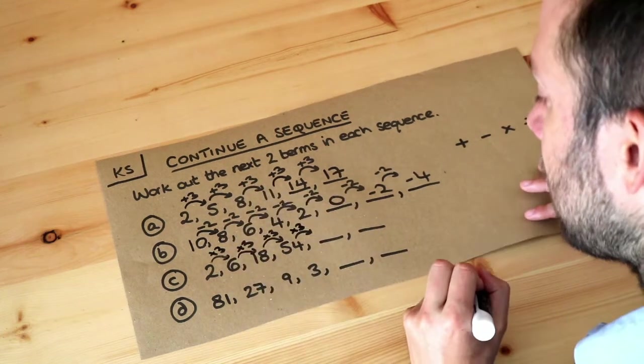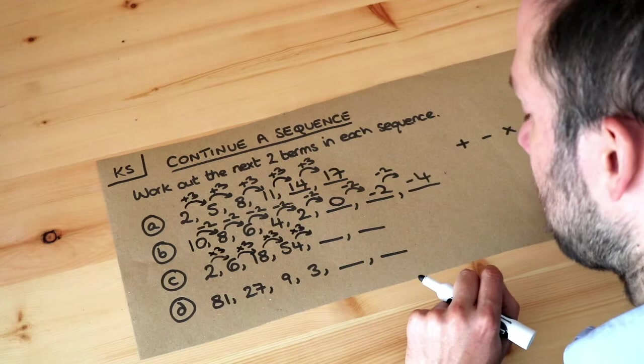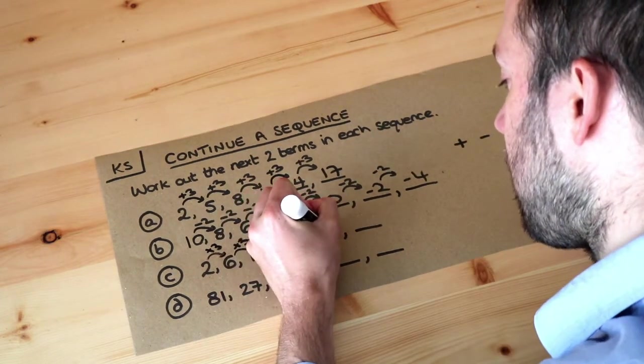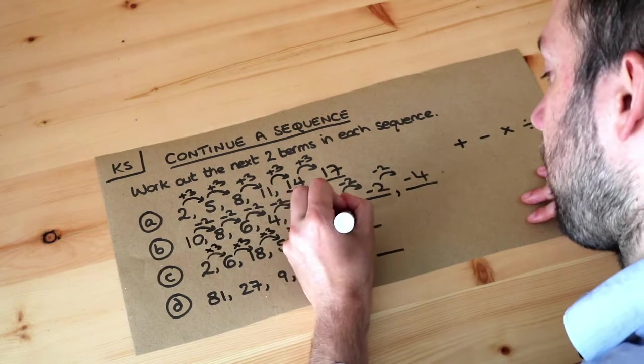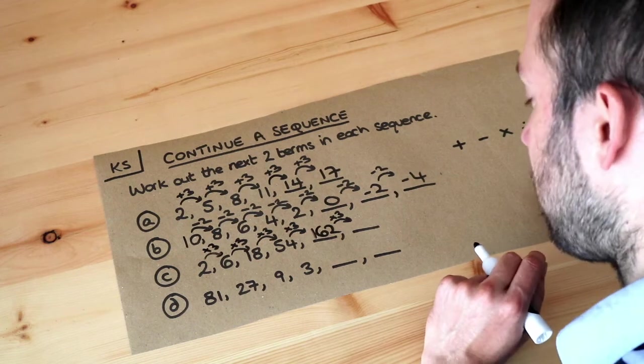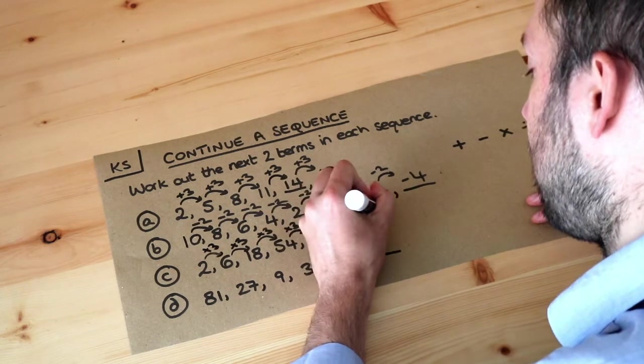So we multiply by 3 again. You could either do this on a calculator or you could do long multiplication. That's going to give you 162. And then if we multiply by 3 again, you can either, again, use your calculator or do long multiplication. That's going to give you 486.